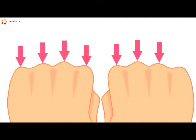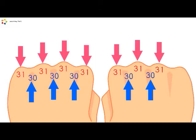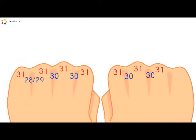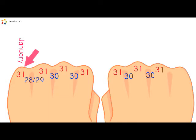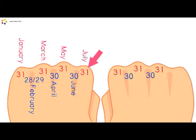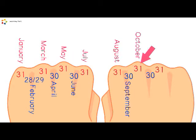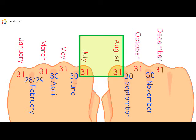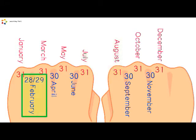Months that fall on the higher peaks have 31 days. Months that fall on the lower group have 30 days, except for February. Start counting the knuckles from your left little finger: January, February, March, April, May, June, July, August, September, October, November, December. Notice that July and August both fall on the higher peak, so both have 31 days each. February is an exception — even if it falls on a knuckle, it has only 28 or 29 days.